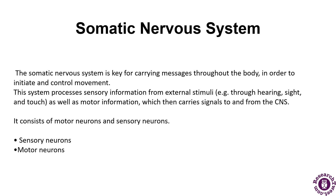The somatic nervous system is a neural system that controls all voluntary actions in the body by transmitting impulses from the CNS to the skeletal muscles. It consists of somatic nerves and processes sensory information from external stimuli, as well as motor information, carrying signals to and from the CNS. It consists of motor neurons and sensory neurons.